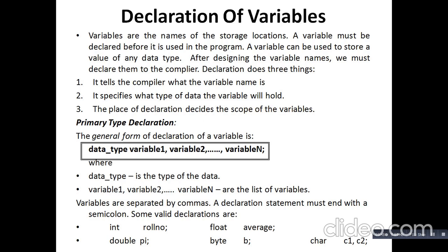If we declare a variable before main, it will be treated as a global variable and its scope is available to all functions. If we declare within a function, the scope is restricted to that function. The primary declaration syntax is: data_type variable1, variable2, ... variableN; where the data type may be any valid C data type, and variable1, variable2 through N are the variable names separated by commas. The declaration statement must end with a semicolon.